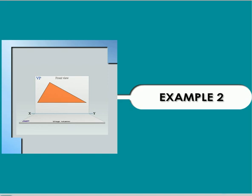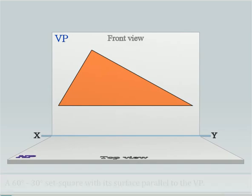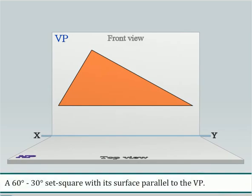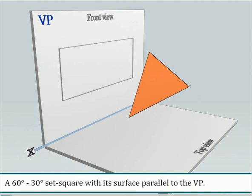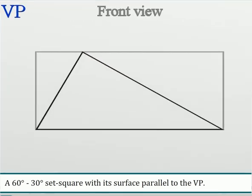Example problem. In this problem, the task is to draw the isometric view of a 60-degree 30-degree Z-square with its surface parallel to the vertical plane. The figure also shows the Z-square as a front view, and the same is enclosed in a box.